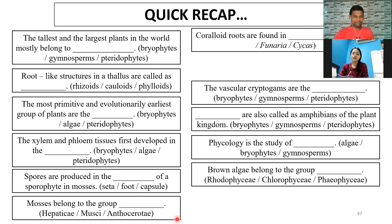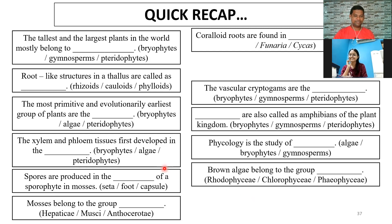Mosses belong to which group? The pronunciation is very important. It's called Musci — M-U-S-C-I. The correct pronunciation is Musci. Correct.